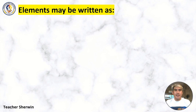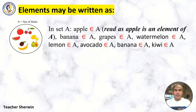So elements may be written as... Example: in set A, apple, the symbol for element is this symbol. Apple ∈ A, read as apple is an element of A. So banana is an element of A, grapes is an element of A, watermelon is an element of A, lemon is an element of A, avocado is an element of A, and kiwi is an element of A.